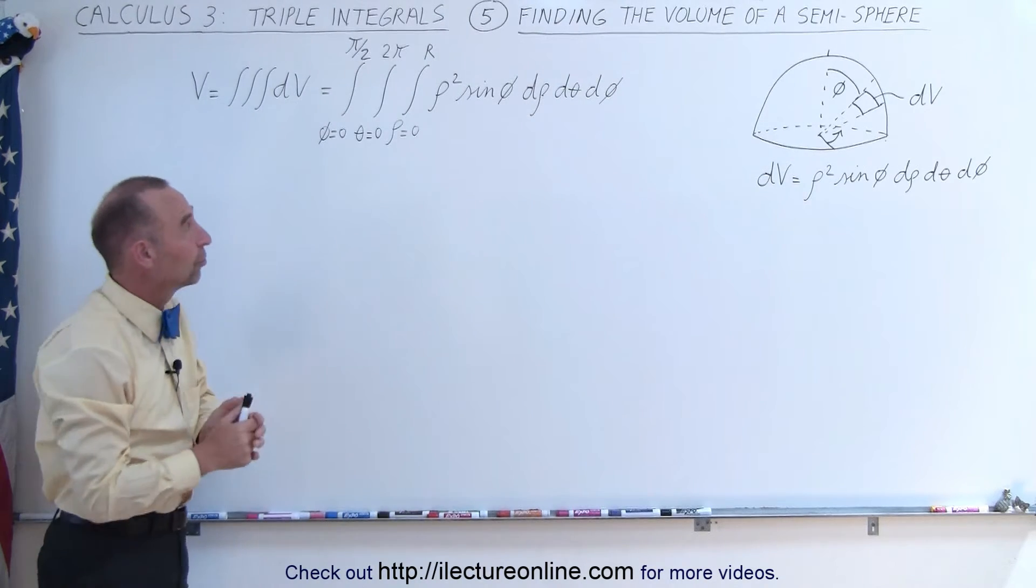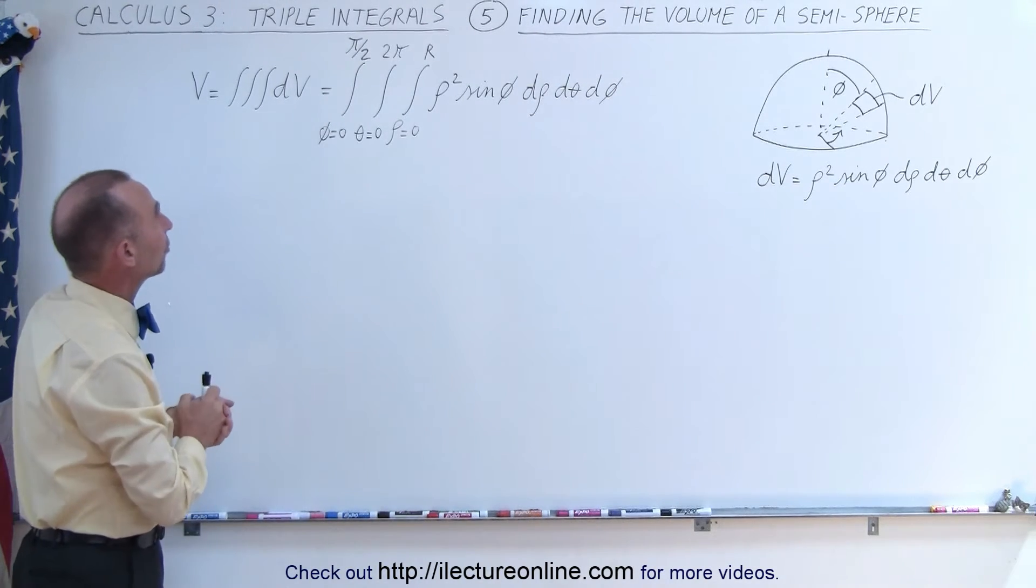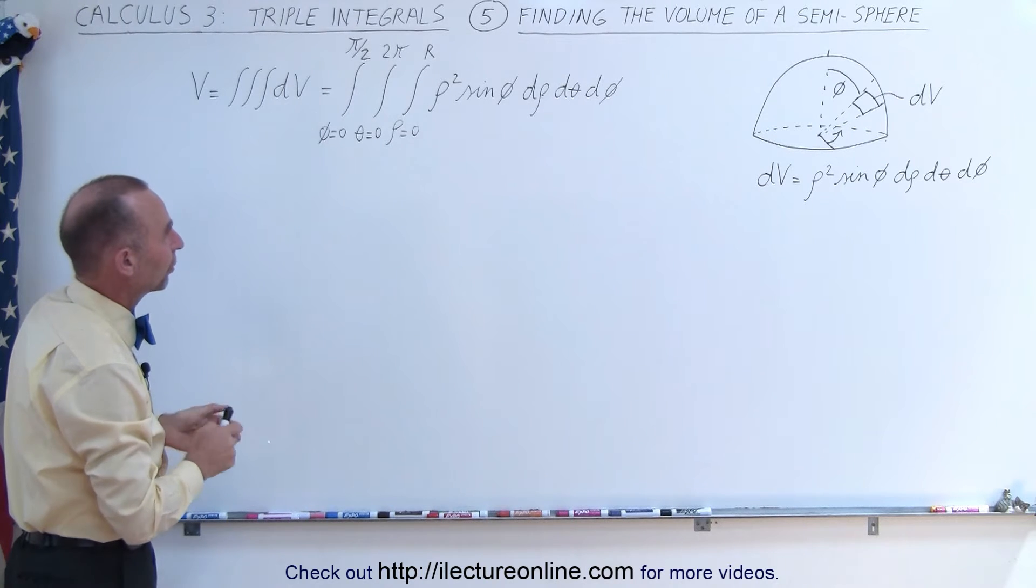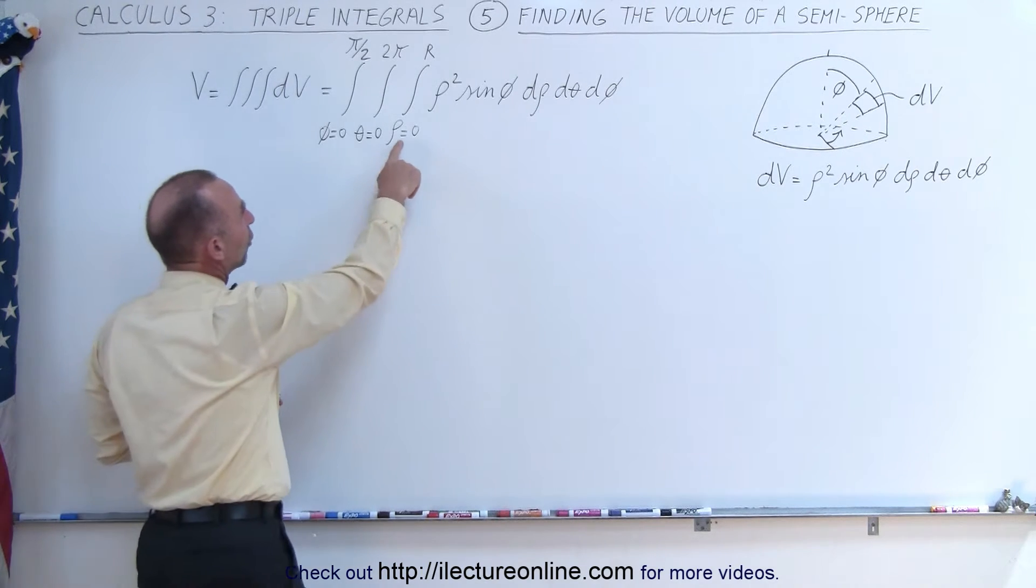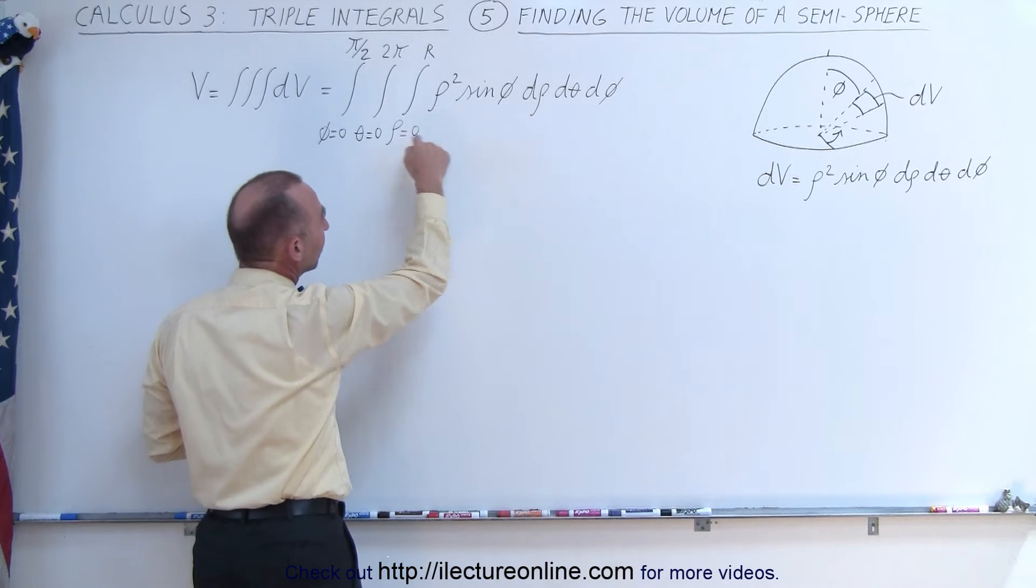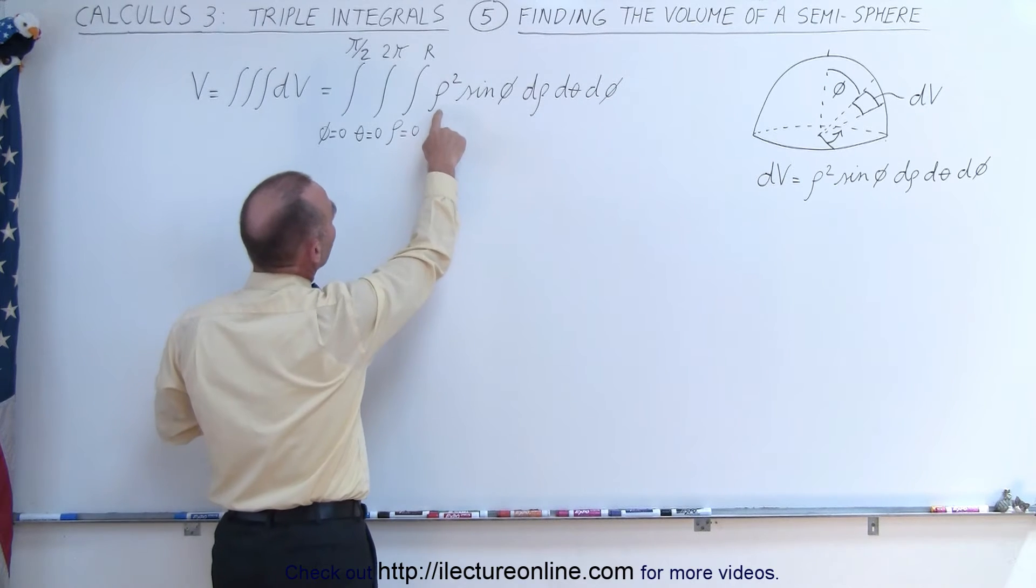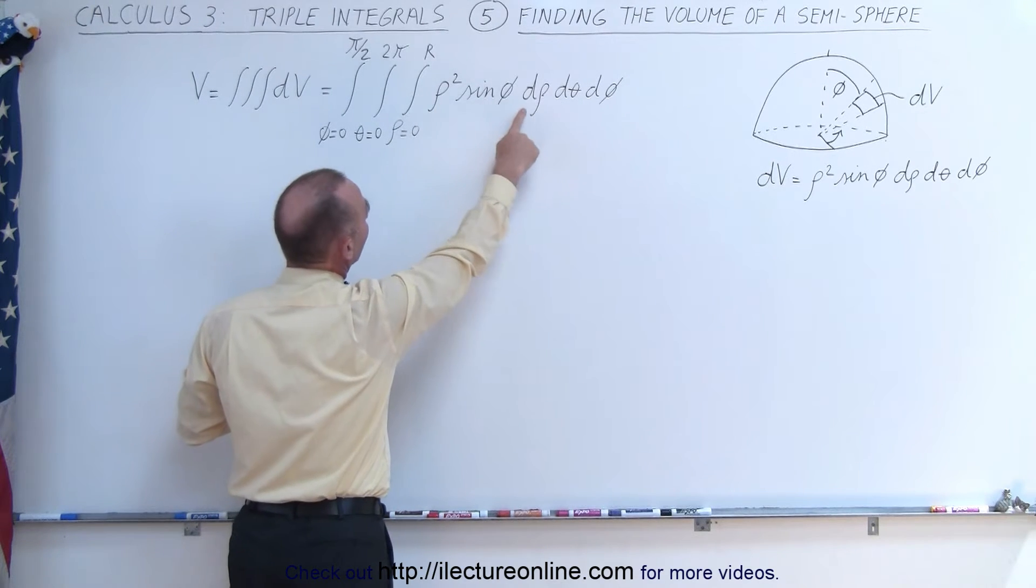So choosing the limits of integration are, of course, very important. Let's first integrate over rho, the radius, so to speak, and then we're going to integrate rho squared d rho.